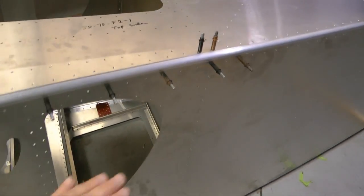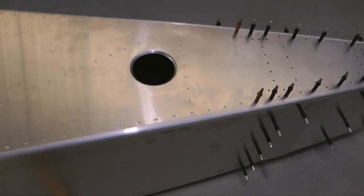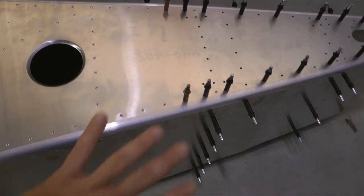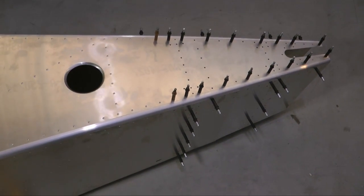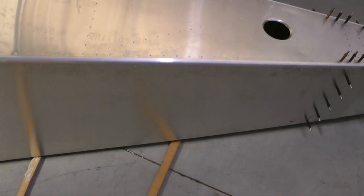And everything has been riveted in between this point going rearward. And then we stop when we get into the tail section here. And then it's just Clecos. And we have it on the floor for easier access.